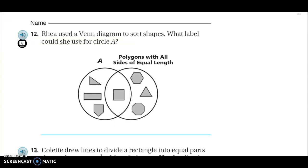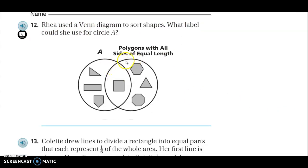Another Venn diagram here. Rhea used a Venn diagram to sort shapes. Or it could be Rey. Maybe it's Rey. Maybe it's more Star Wars characters. I don't know how to spell it. Rey used a Venn diagram to sort shapes. What label could she use for circle A? So now we've got to really think. And we have to look. What do all of these shapes have in this circle in common? And that's what your title is going to be.